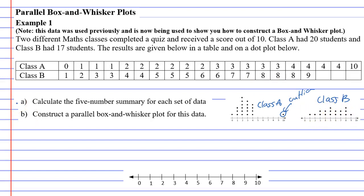Part A says to calculate the five number summary for each set of data. We'll start with class A. With 20 scores the middle falls between the 10th and 11th values — counting 1 through 10 gives us the median position here. So the median is 2.5.